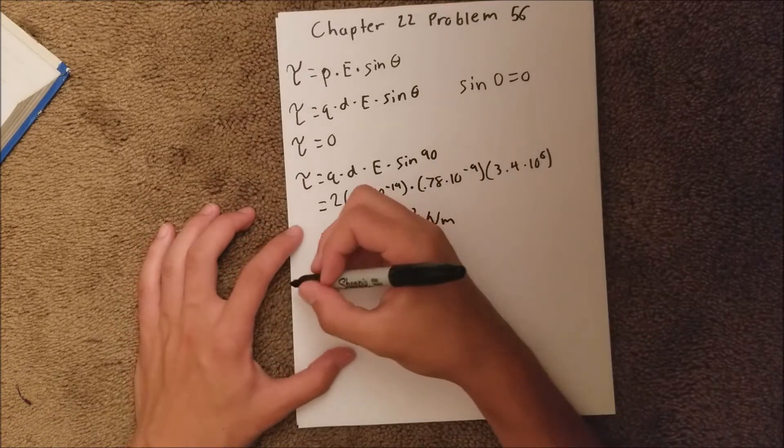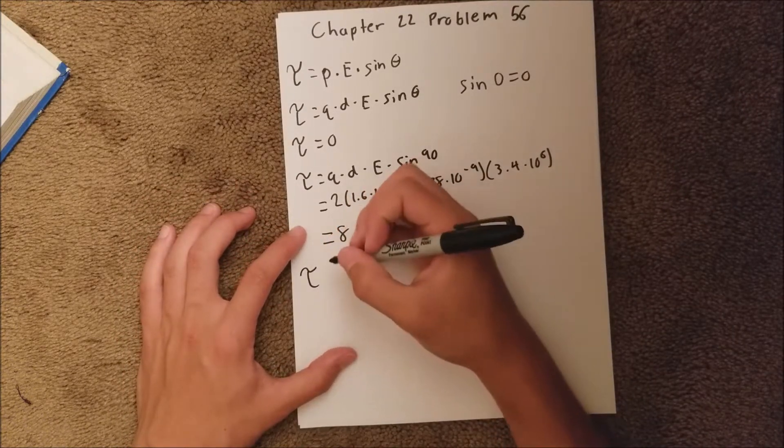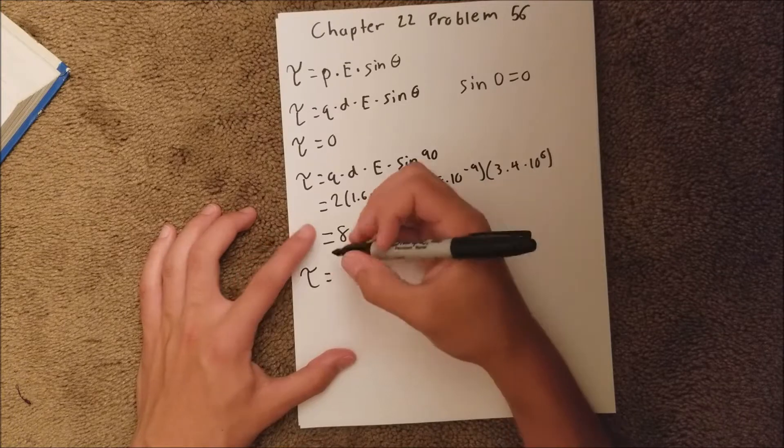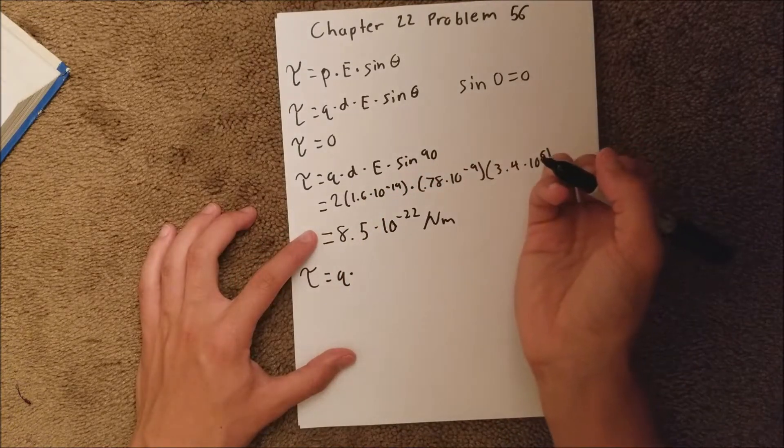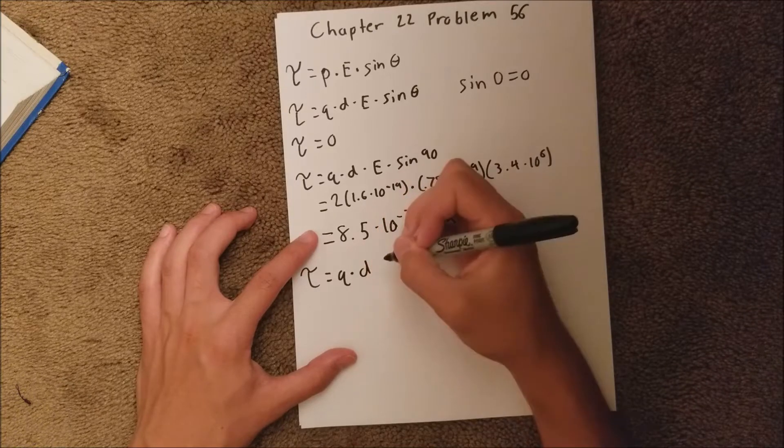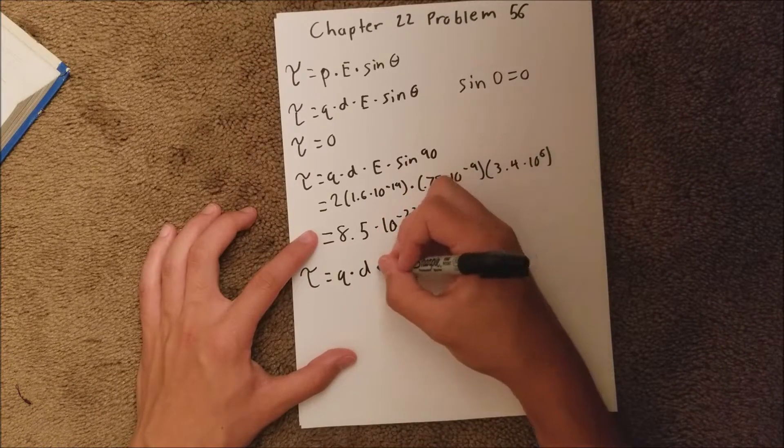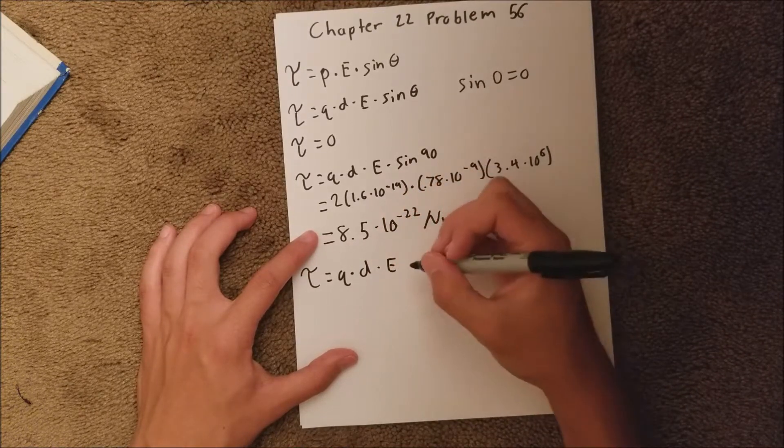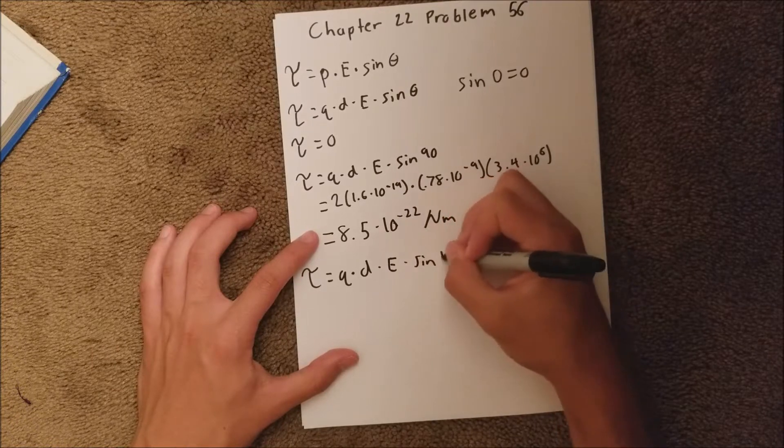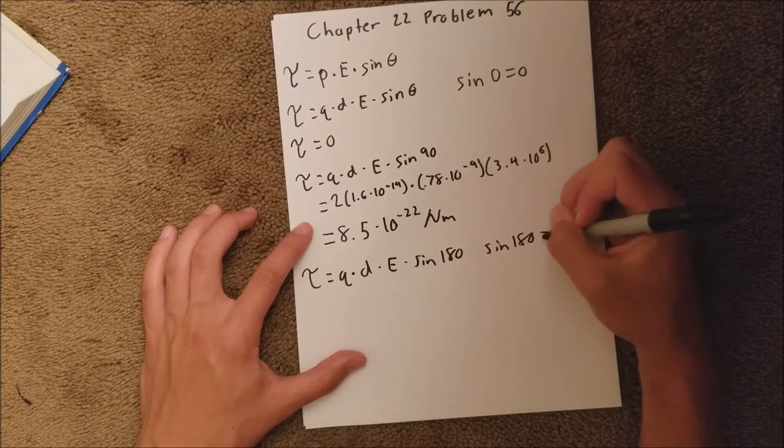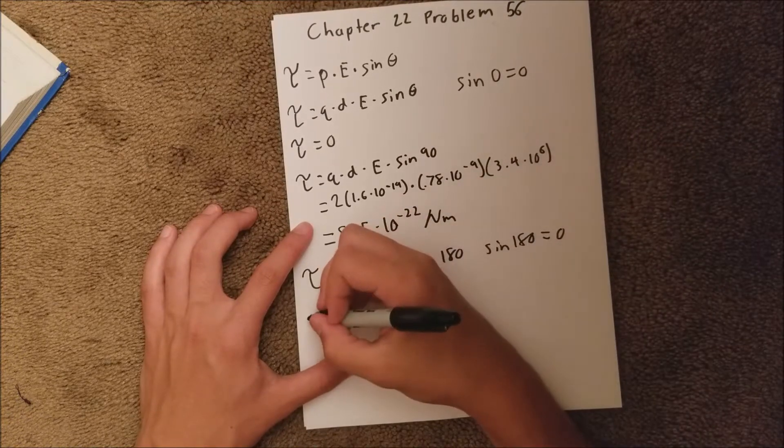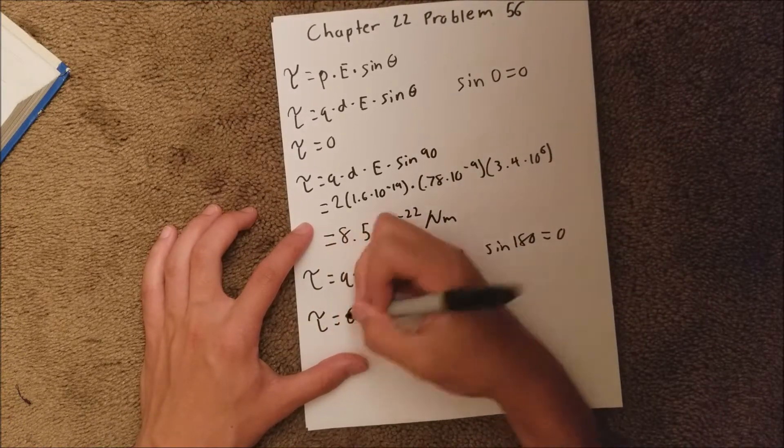And then for our last situation, it wants the anti-parallel, so facing the opposite direction of the electric field. That's going to be times the sine of 180 degrees, which is also 0, so that means the torque is going to be 0.